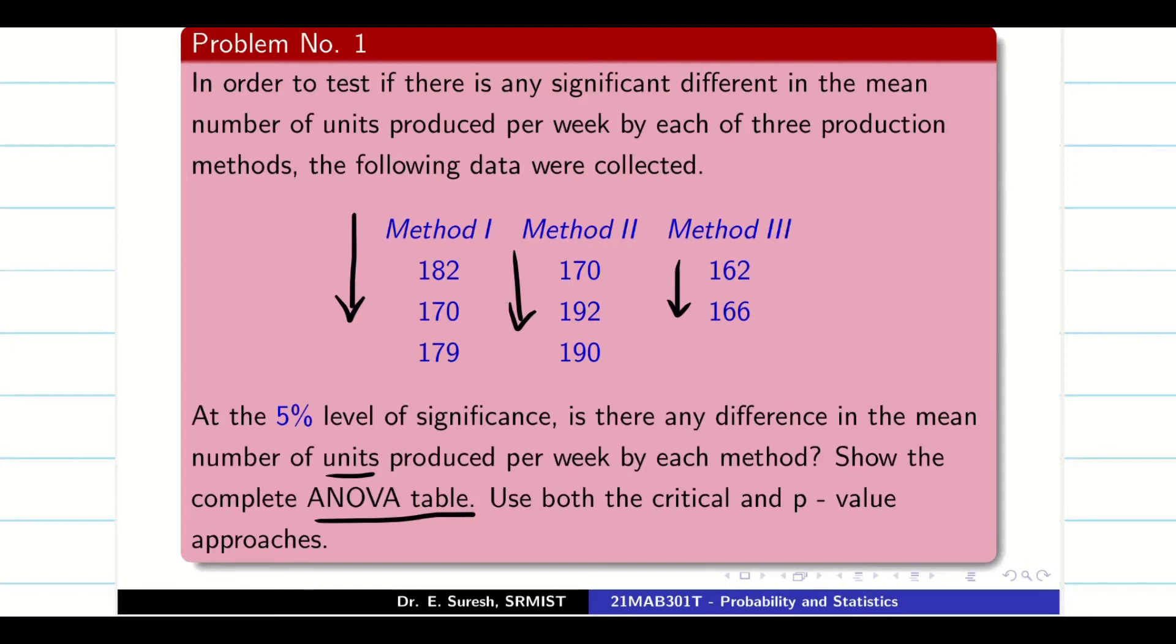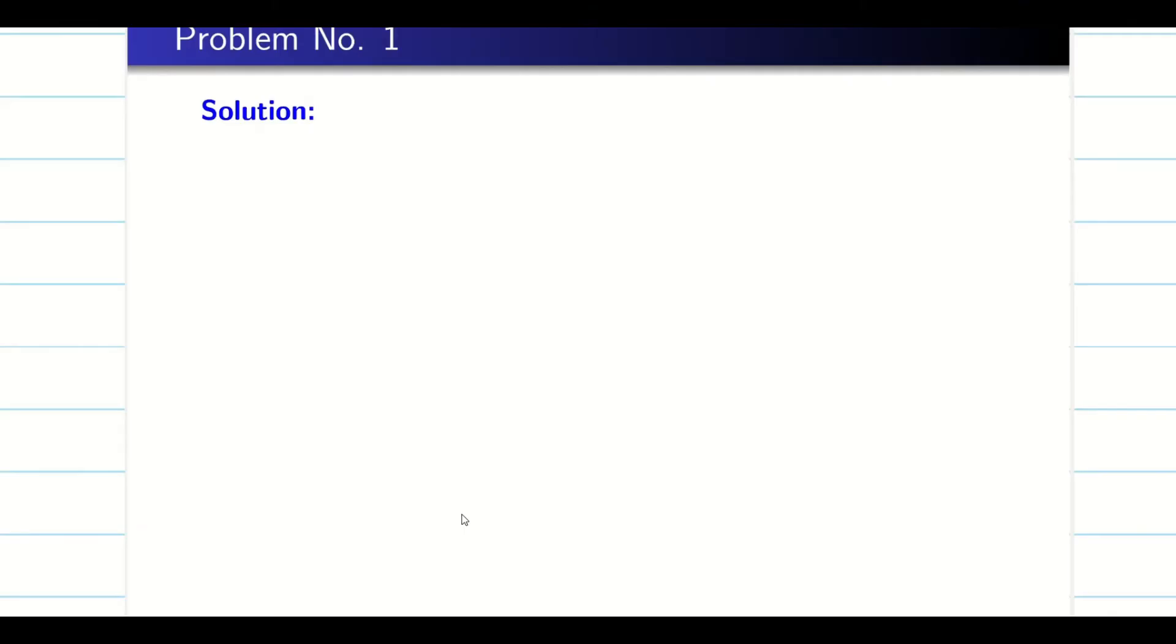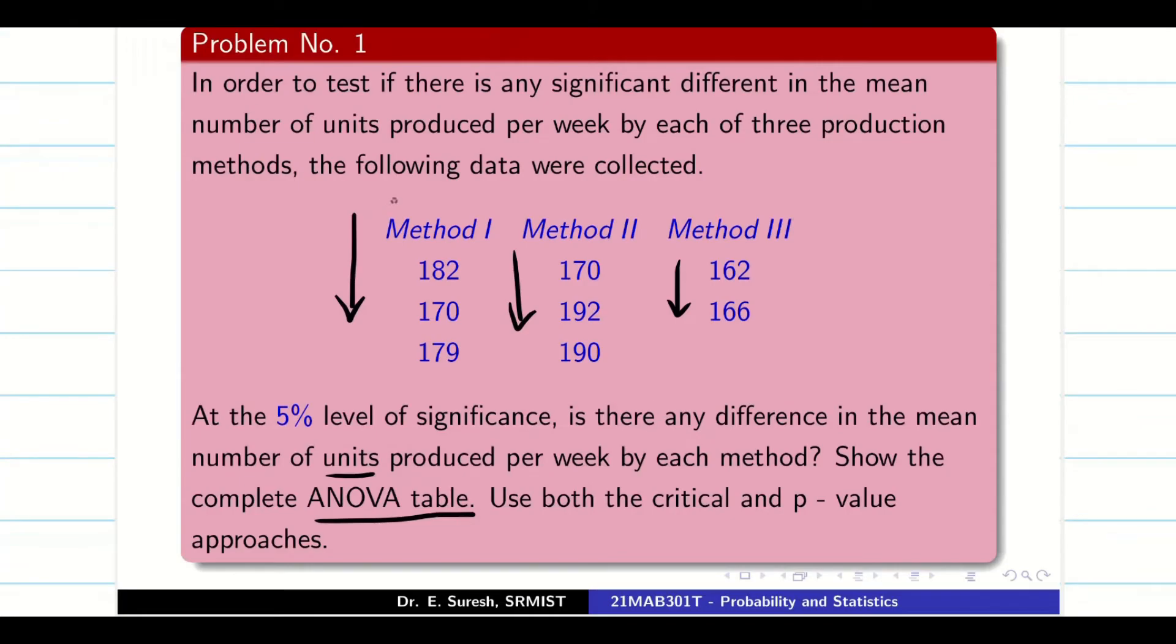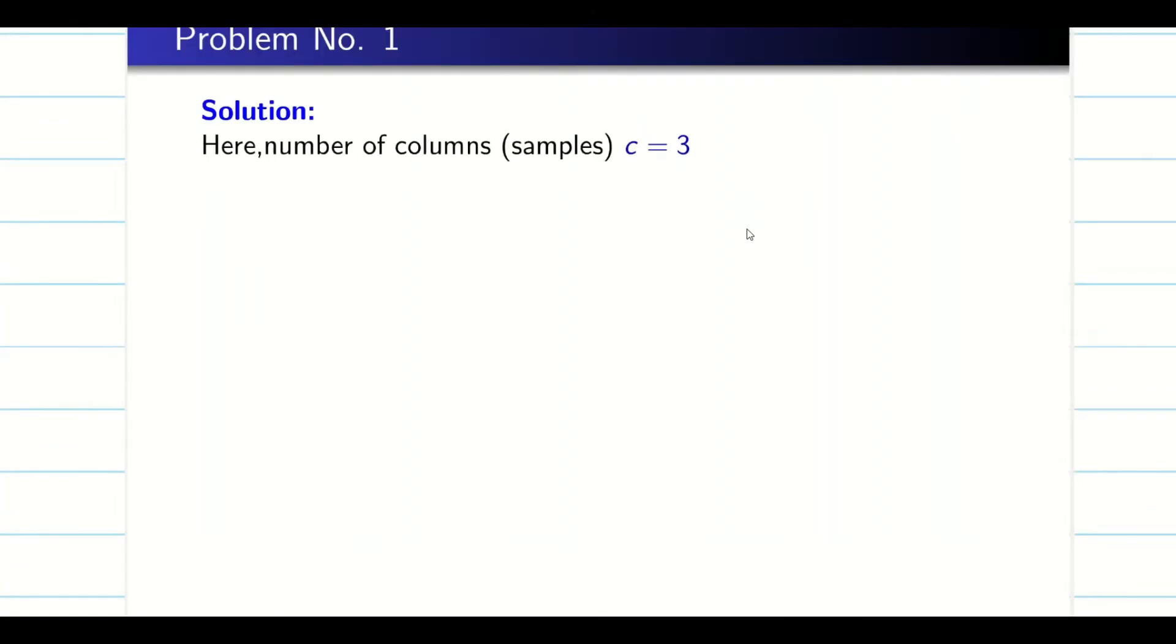So here they are going to check whether the three methods are the same or not. It is going to be one-way ANOVA. As I said initially, step by step we have to do. First, see here how many columns are there? Column 1, column 2, column 3. So first let us write number of columns, c = 3. Next, null hypothesis. As I said in the basics video, just simply write: there is no significant difference. That is going to be my null hypothesis H₀.